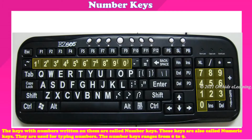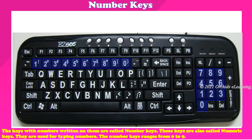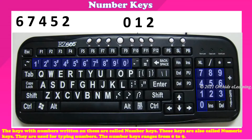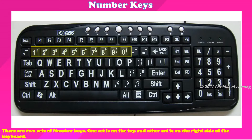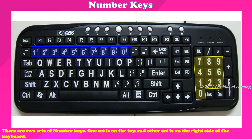Number keys: the keys with numbers written on them are called number keys. These keys are also called numeric keys. They are used for typing numbers. The number keys range from zero to nine. There are two sets of number keys — one set is on the top and the other set is on the right side of the keyboard.